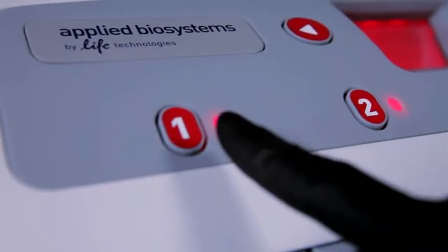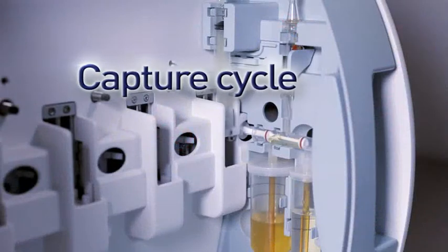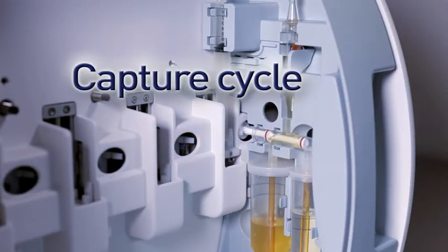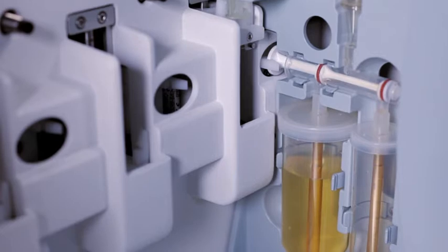When you're ready to start a run, just push the numbered button directly above the cartridge. During capture, the sample will cycle through the antibody-coated Pathatrix Auto Beads, which are held in the capture chamber by magnets. At regular intervals, the liquid will be expelled from the capture chamber back into the sample tube. This allows the sample to be mixed thoroughly.